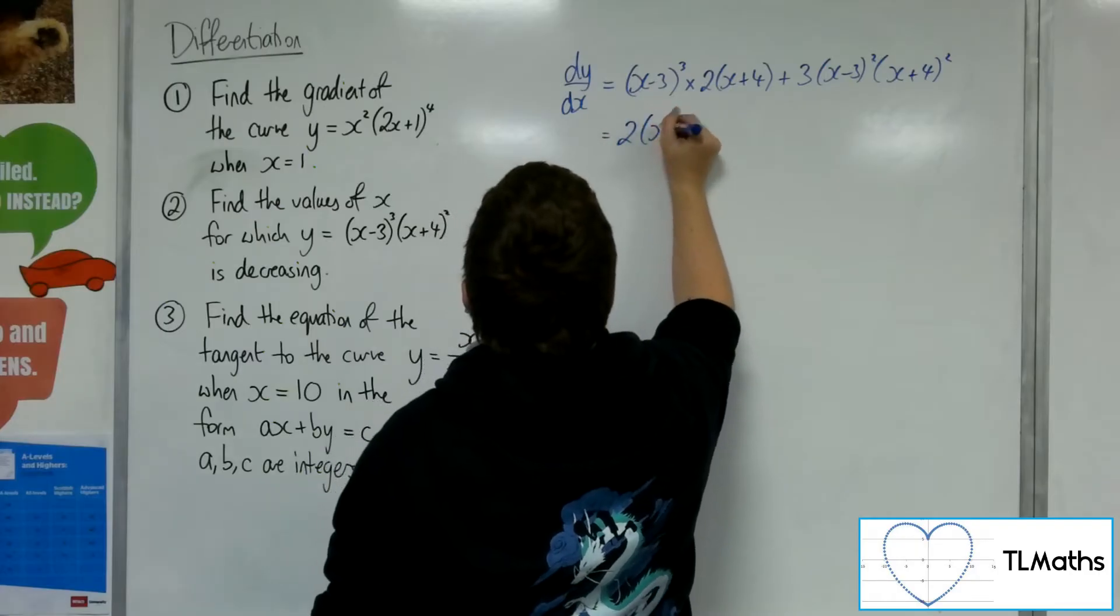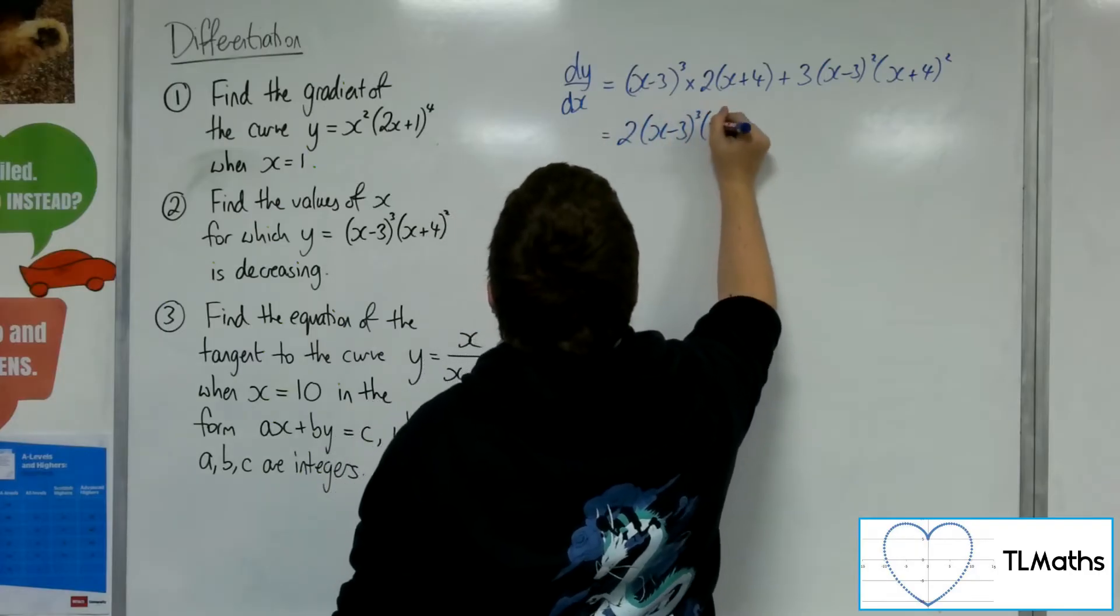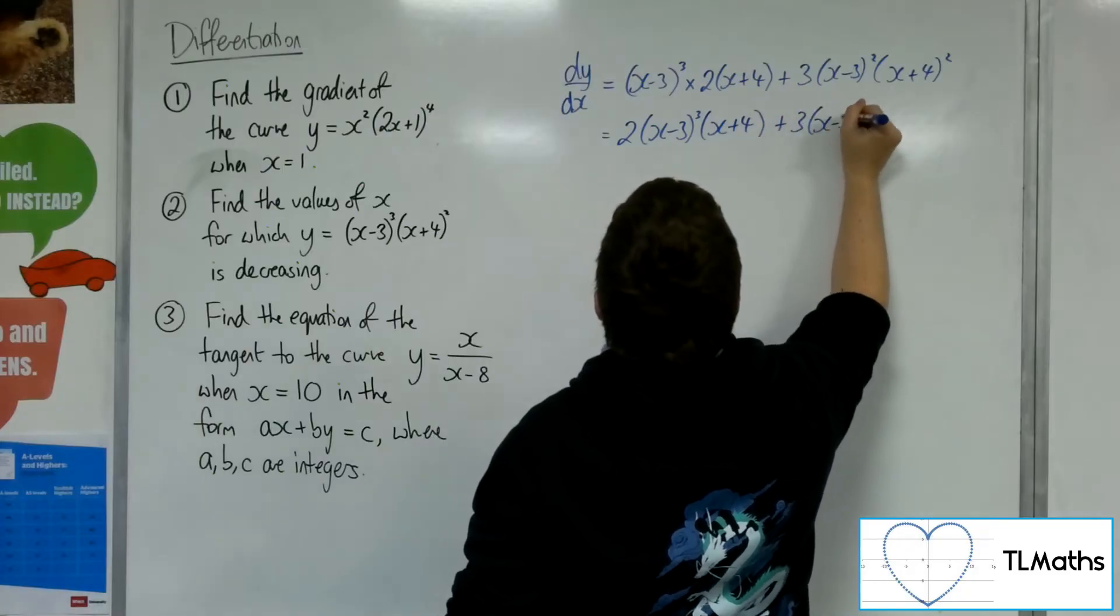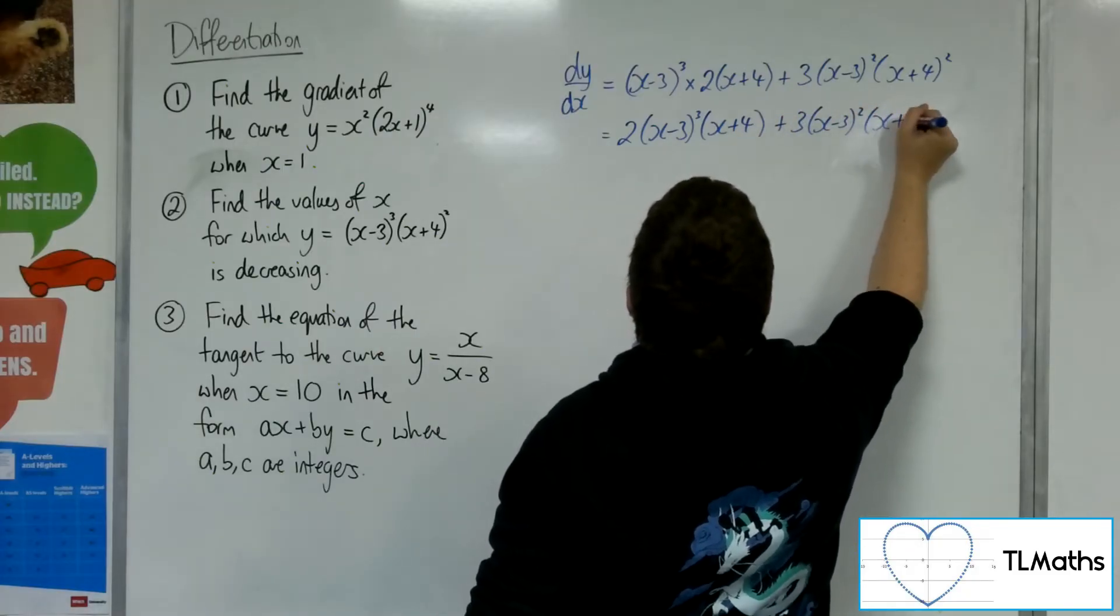So tidied up, this is 2 lots of x minus 3 cubed times x plus 4, plus 3 lots of x minus 3 squared times x plus 4 squared.